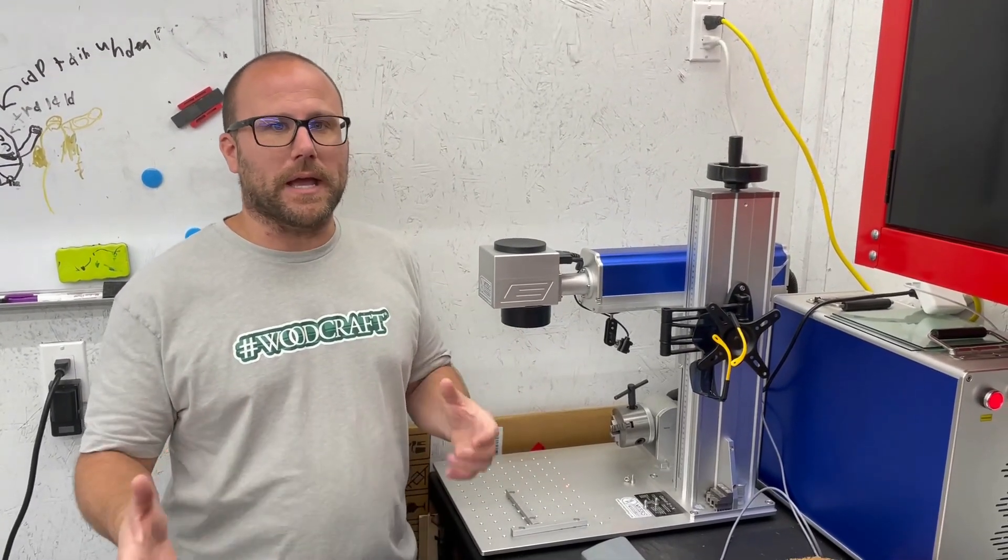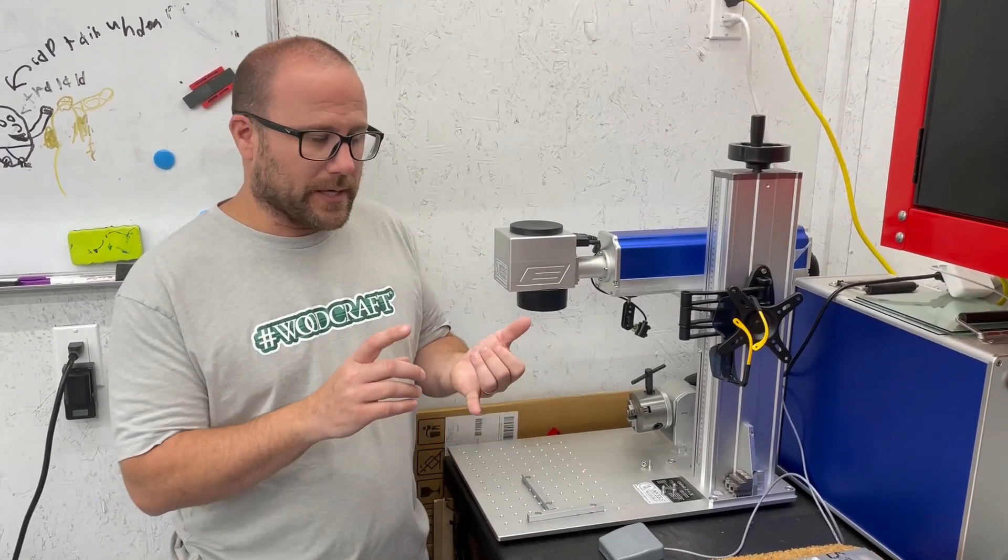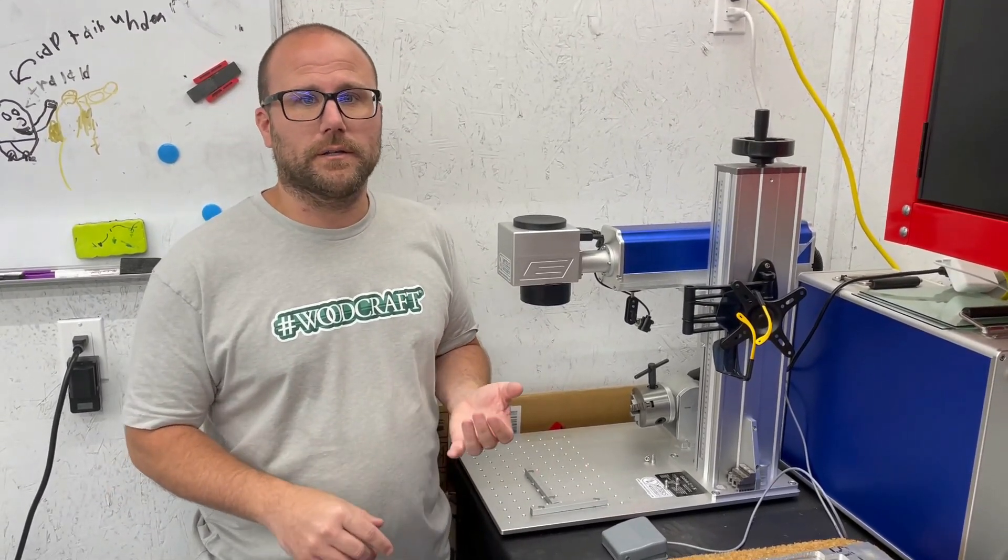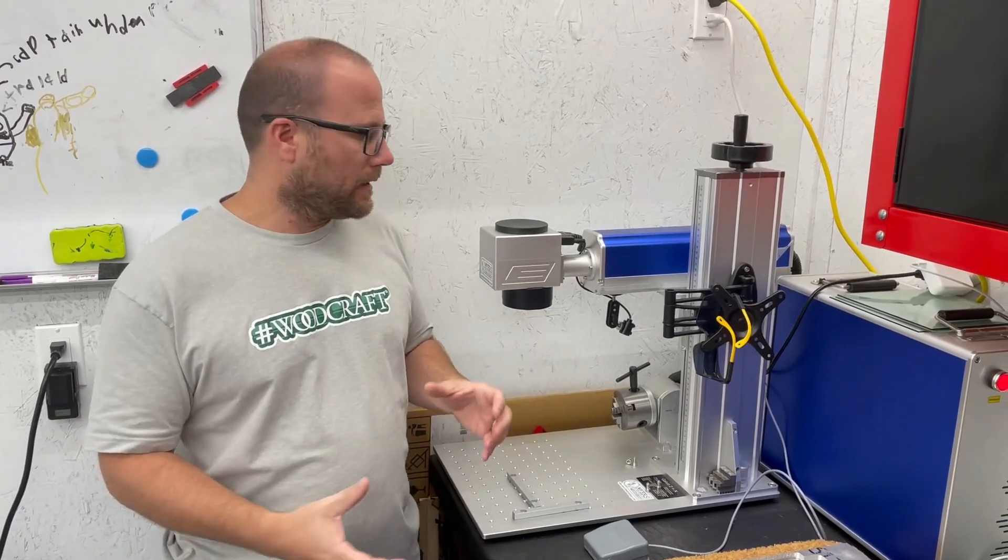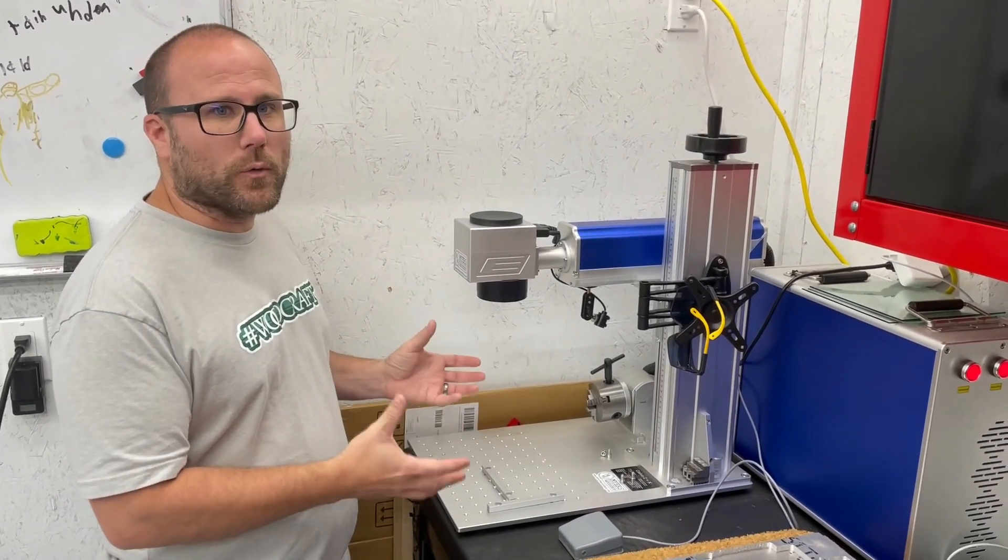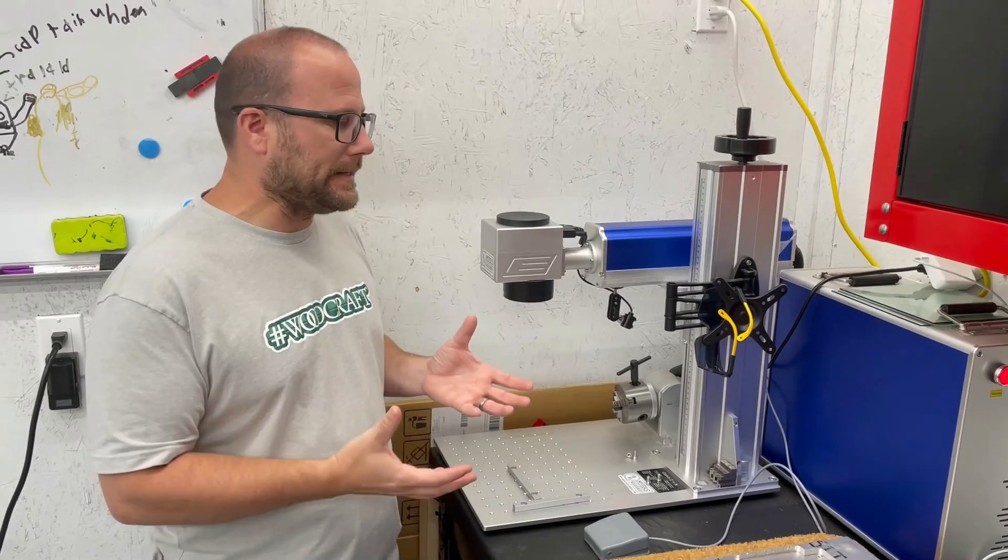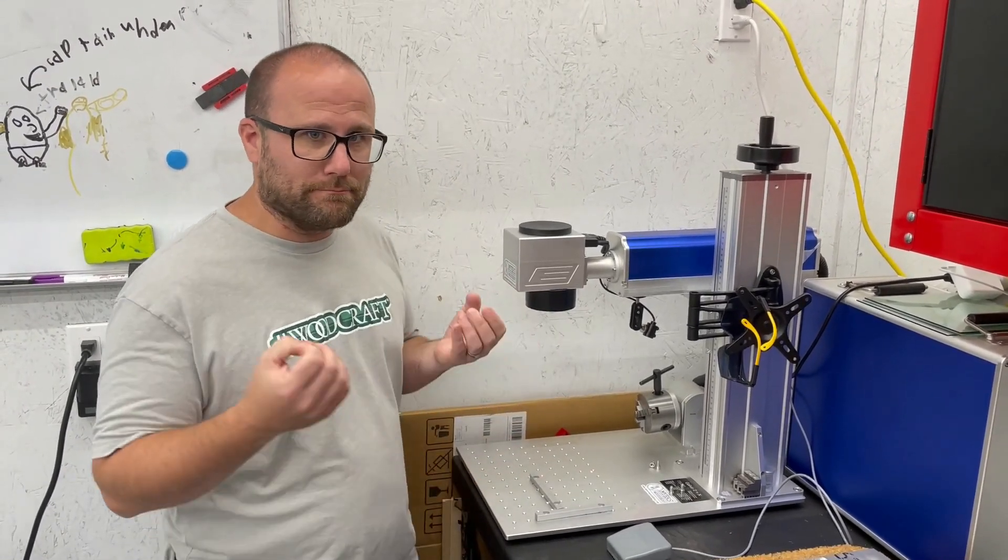So a CO2 laser is made for organic material, being leather, wood, things that are living and breathing. A fiber laser is used more for non-organic, basically 99% of what you're going to use this for is metals.